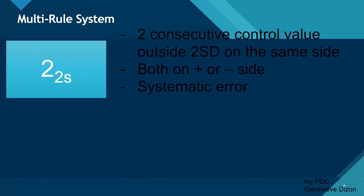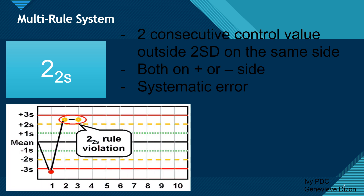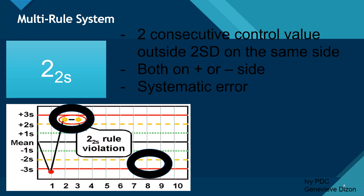The 2-2-S rule involves two consecutive control values that are both outside the two standard deviations, and these two consecutive values should be on the same side — both on the positive side or both on the negative side. This reflects a systematic error, because these are consecutive control values. Remember, systematic error involves precision results that are not accurate. With a 2-2-S violation, we reject the specimens that were run together with this control.